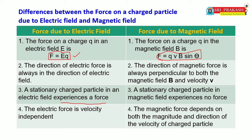Third point: a stationary charged particle in an electric field experiences a force, because the force expression has no velocity component — it is independent of velocity. In contrast, a stationary charged particle in a magnetic field experiences no force, because stationary means velocity equals zero, and if velocity is zero the net force is zero. Fourth point: the electric force is velocity independent, whereas in a magnetic field the force depends upon both the magnitude and direction of velocity.